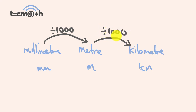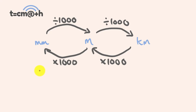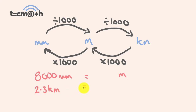To go back the other way, we multiply by 1,000. So to go from kilometers to meters, it's times 1,000, and to go from meters to millimeters, we also multiply by 1,000. So let me give you a couple of examples: what is 8,000 millimeters in meters? What is 2.3 kilometers in meters? And what is 5,090 meters in kilometers?